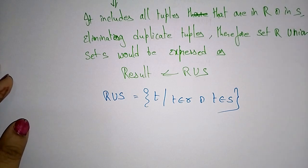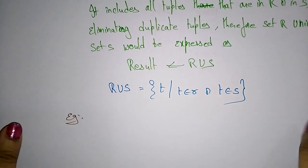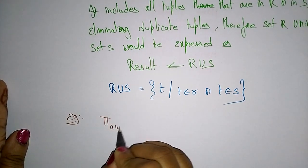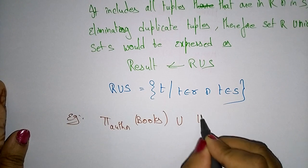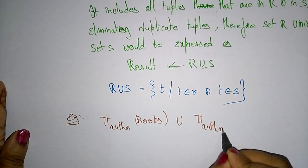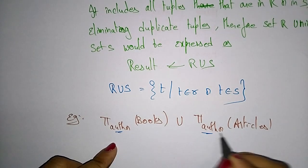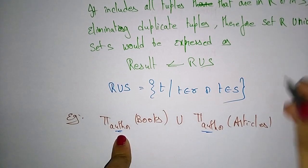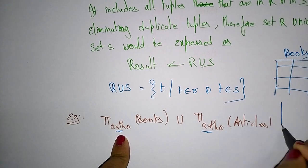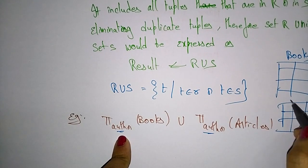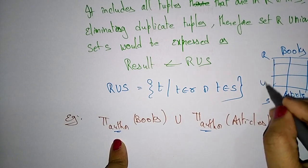Let me take one example. We take pi_author(Books) union pi_author(Articles). Here, Books is one table and Articles is another table — just like R and S. So this is R and this is S, and we are performing R union S.